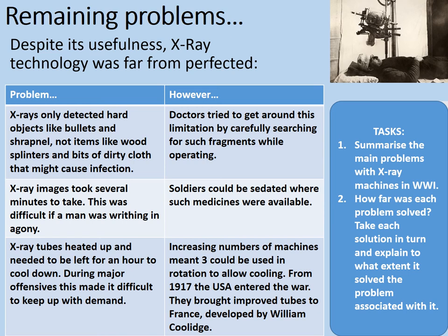Your tasks: summarise the main problems with the x-ray machines in World War I in a paragraph or two. Then, how far was each problem solved — was it solved entirely or only to an extent? Take each solution in turn and explain to what extent it solved the associated problem. For example, how much did doctors trying to find fragments in wounds solve the problem of x-rays not picking up on things like wood and bits of dirty cloth? Pause the video here and press play when you're ready to continue.